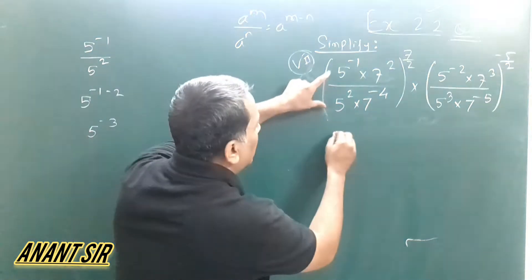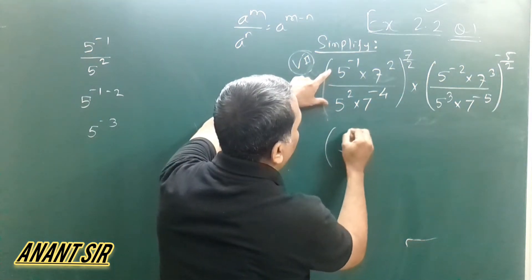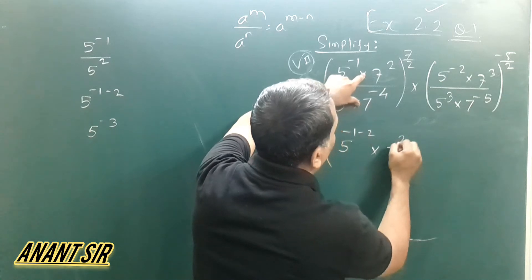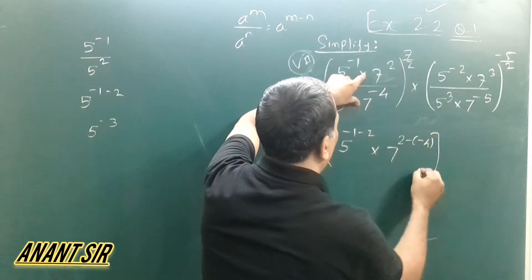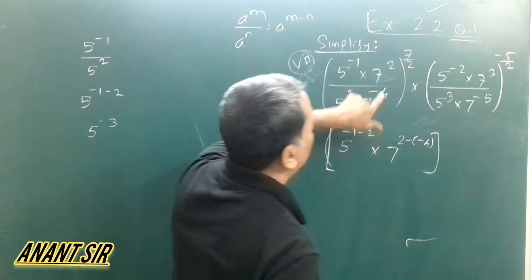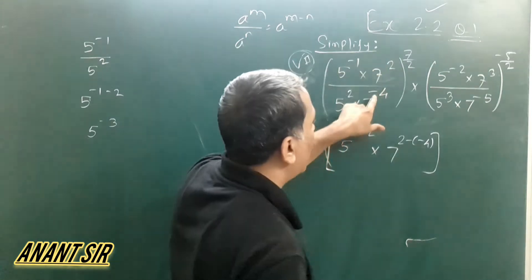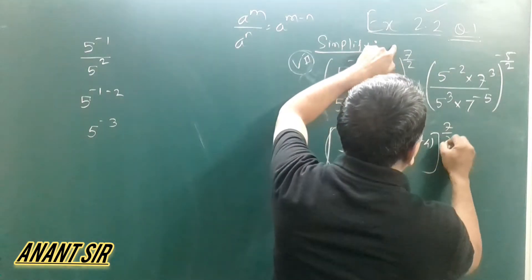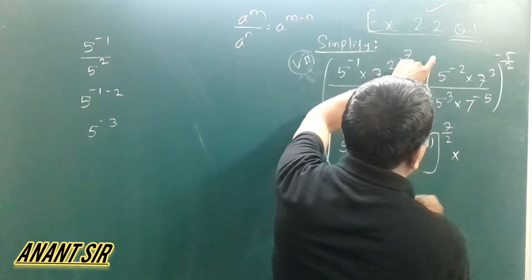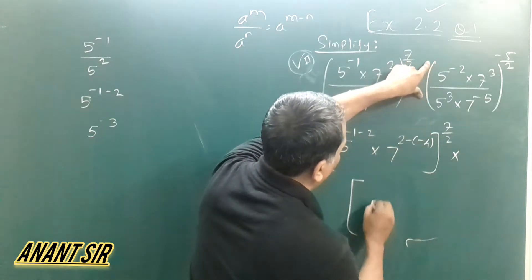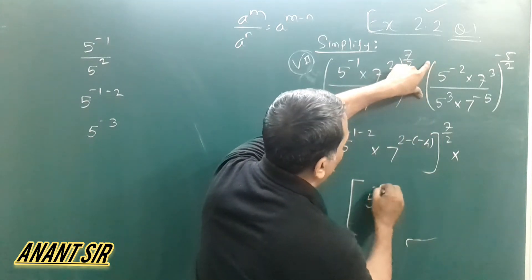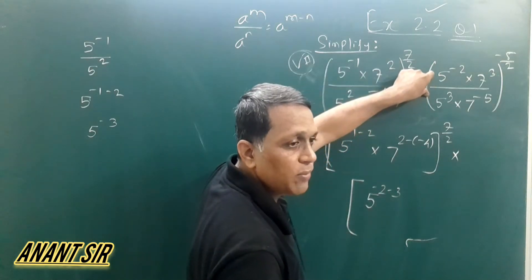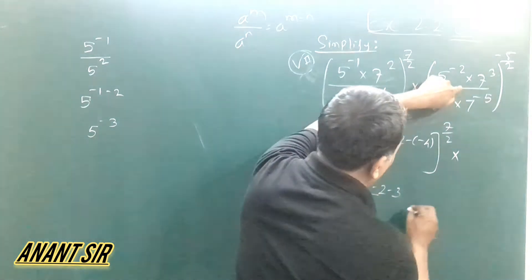This is 5 raised to minus 1, minus 2. Similar to the 2 minus minus 4. So 2 minus minus 4, which is raised to the power 7 by 2, multiply it. This is the right thing to be solved. So this is 5 raised to minus 2, minus 3. This is the same thing — the power is minus 3.